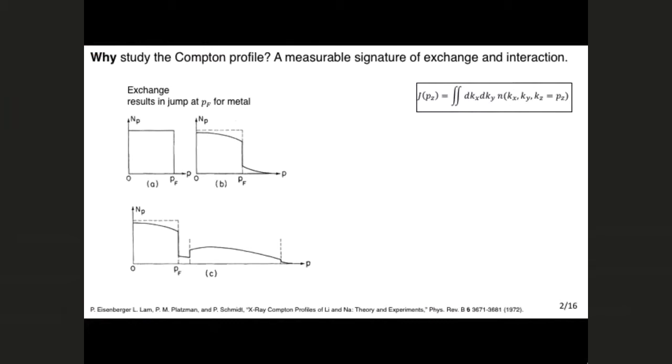I already mentioned the Compton profile is related to the momentum distribution, and the momentum distribution contains signatures of exchange and correlation. Shown on the left here are just some schematic drawings of simple momentum distributions of simple systems I've taken from this 1972 Bell Labs paper. The first one is just the momentum distribution of the free Fermi gas. Right off the bat, Fermion exchange results in the jump in the momentum distribution, whereas for a classical system, you have a Boltzmann like a Gaussian curve. This will result in a cusp point in the Compton profile right at the Fermi momentum. Now next, if you include electron interaction, then you reduce the magnitude of this jump, and that will result in the smoothing of the cusp point in the Compton profile.